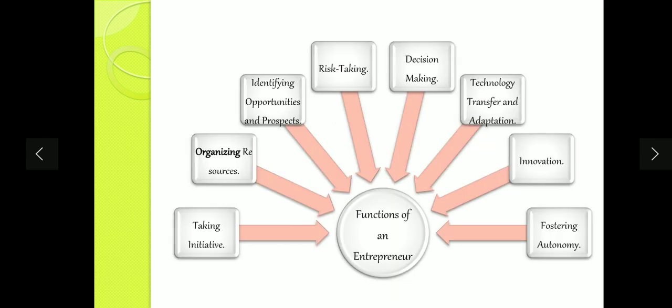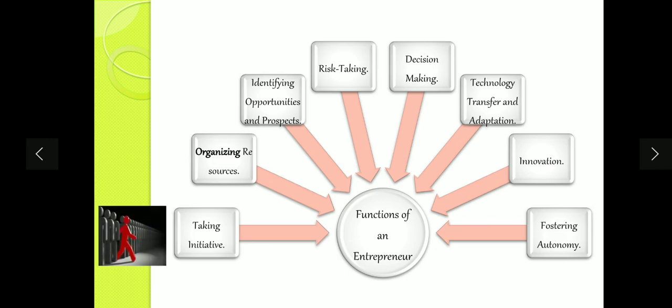Next: functions of an entrepreneur. What is an entrepreneur doing in his business? First, taking initiative — as the owner of the company, he will not expect his employees to improve and work; he himself has to take responsibility and start. Second, organizing resources — it is the entrepreneur's responsibility to arrange whatever resources the organization needs: money, men, material, machinery — all resources required.